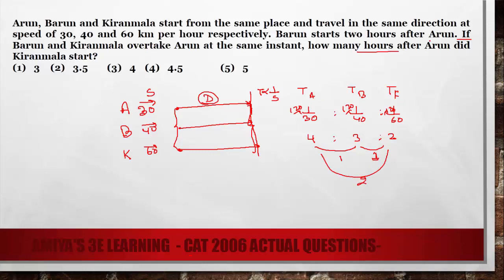The question is B starts 2 hours after Arun and we have to answer the A to K gap. Here the gap is 1 and the required gap is 2. But by question, if 1 becomes 2, this gap should be 4 and our answer is option number 3.